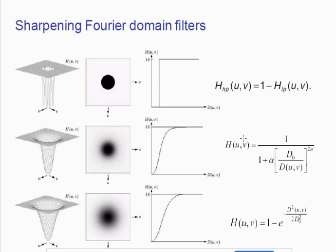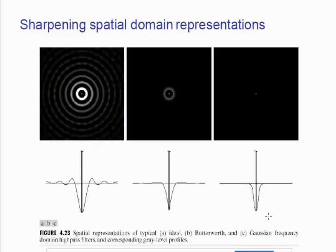We are going to discuss sharpening filters for the frequency domain. First, we have the ideal high pass filter — its response is just like a box filter. Then there is the Butterworth filter, which has an alpha element and is again the inverse of a low pass filter. Finally, there is the Gaussian high pass filter.